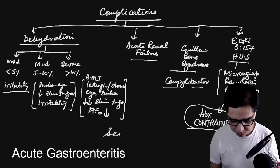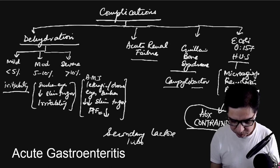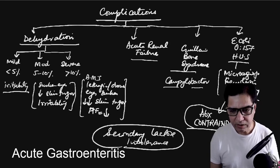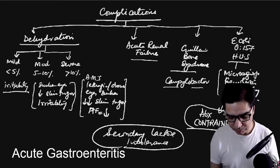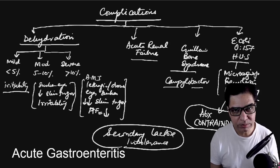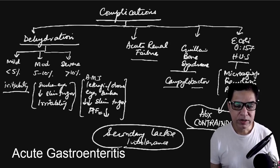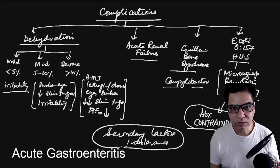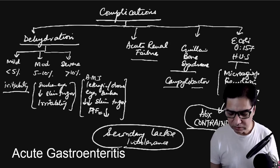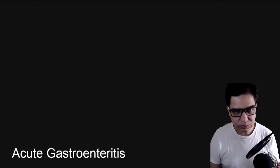Another complication in small babies is secondary lactose intolerance. After the gastroenteritis episode resolves, the child may continue to have loose stools when taking milk, because the intestinal epithelium — which produces the enzyme lactase — is destroyed and takes a few days to regenerate. This causes lactose maldigestion, presenting as explosive, smelly diarrhea with perianal excoriation.